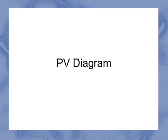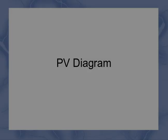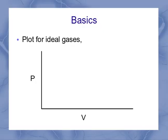Now we can examine PV diagrams as they're used in physics. Basically, a PV diagram is a plot for ideal gases, where I've got P for pressure on the vertical axis and V for volume on the horizontal axis.